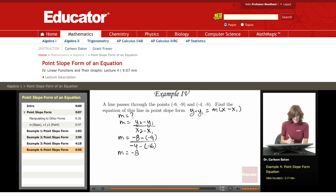So m equals negative 8 plus 9 over negative 4 plus 6. I'm going to simplify this further. Negative 8 plus 9 is 1, negative 4 plus 6 is 2. So now I have m equals 1 half.